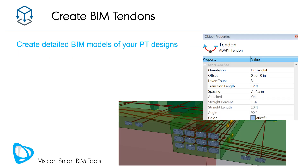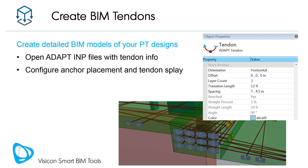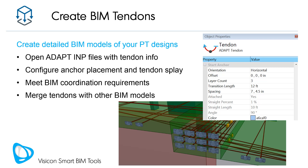If you are an ADAPT Builder user, you can also use Visicon to create detailed BIM models of your post-tension tendons. To get started, open an ADAPT INP file with tendon info. Once opened in Visicon, configure the tendon's anchor placement and splay to produce a realistic installation layout. The BIM tendons will help you meet your project's BIM requirements. Use Visicon to merge your BIM tendons with any other discipline models.